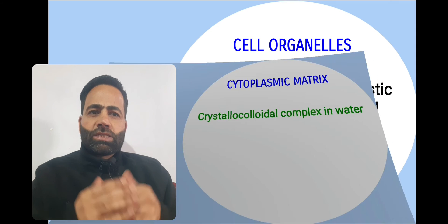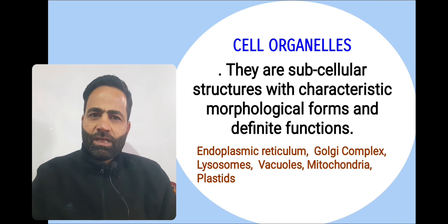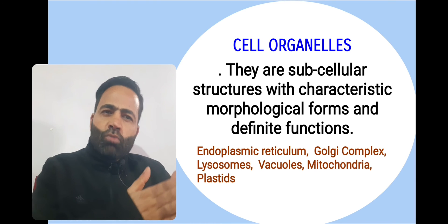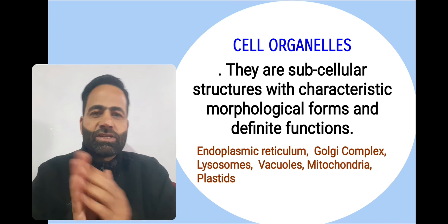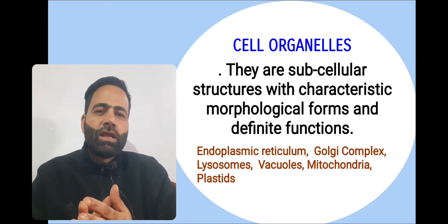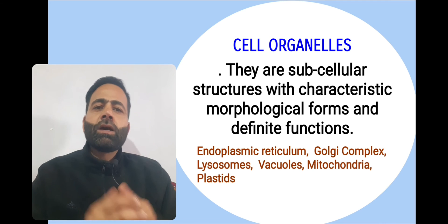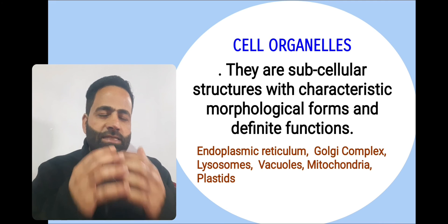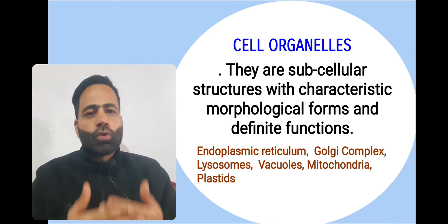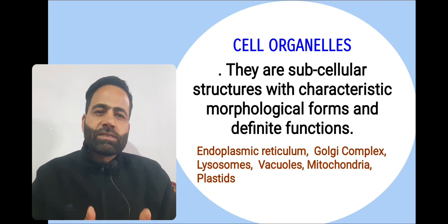Another component of the cytoplasm are the cell organelles. Cell organelles are subcellular structures with characteristic morphological forms and definite functions. There are a number of cell organelles in the cytoplasm of eukaryotic cells, such as endoplasmic reticulum, Golgi complex, lysosomes, vacuoles, mitochondria, plastids, and others.